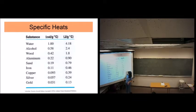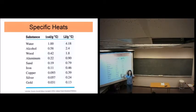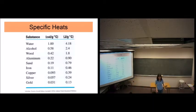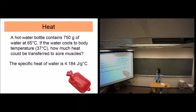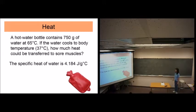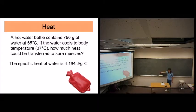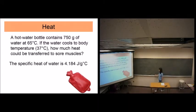Let's do a calculation using specific heat. A hot water bottle contains 750 grams of water. If the water cools to body temperature, how much heat could be transferred to sore muscles? If you know the units of specific heat, you can come up with the equation. We want Q in joules, so Q equals specific heat times mass times delta T.